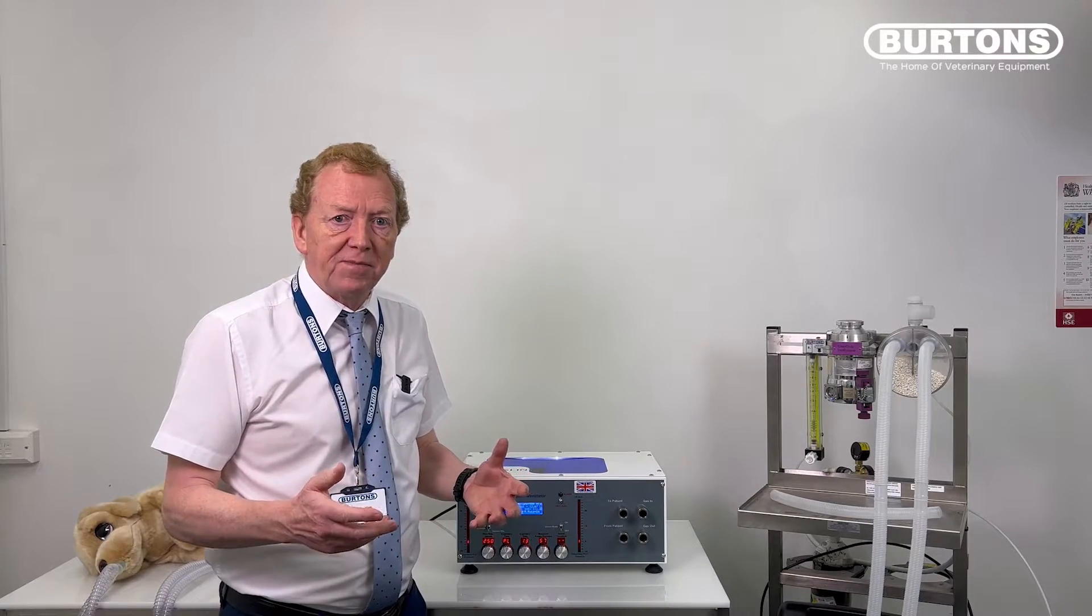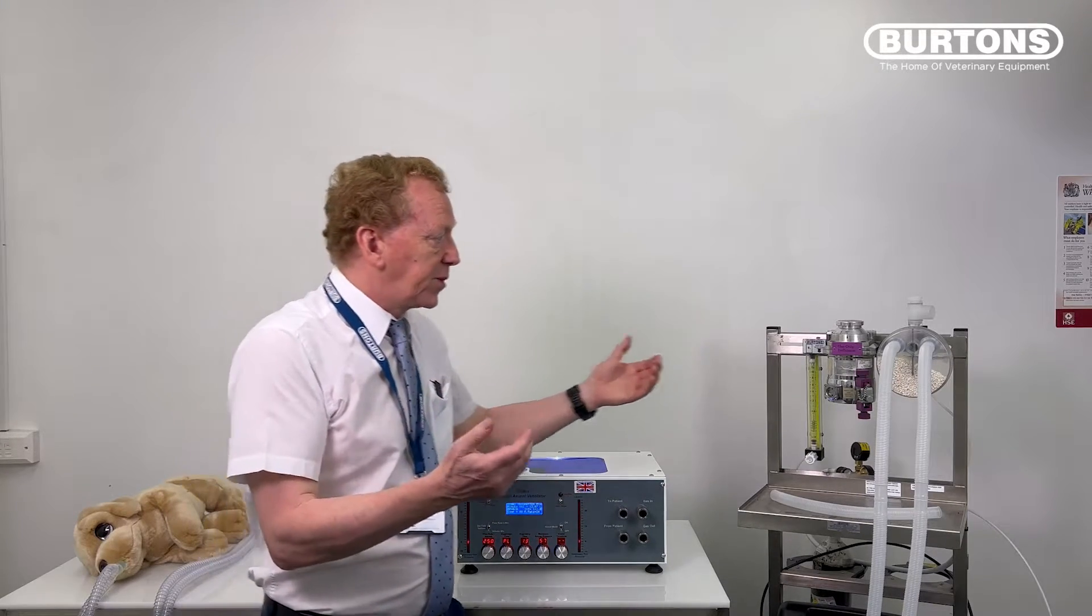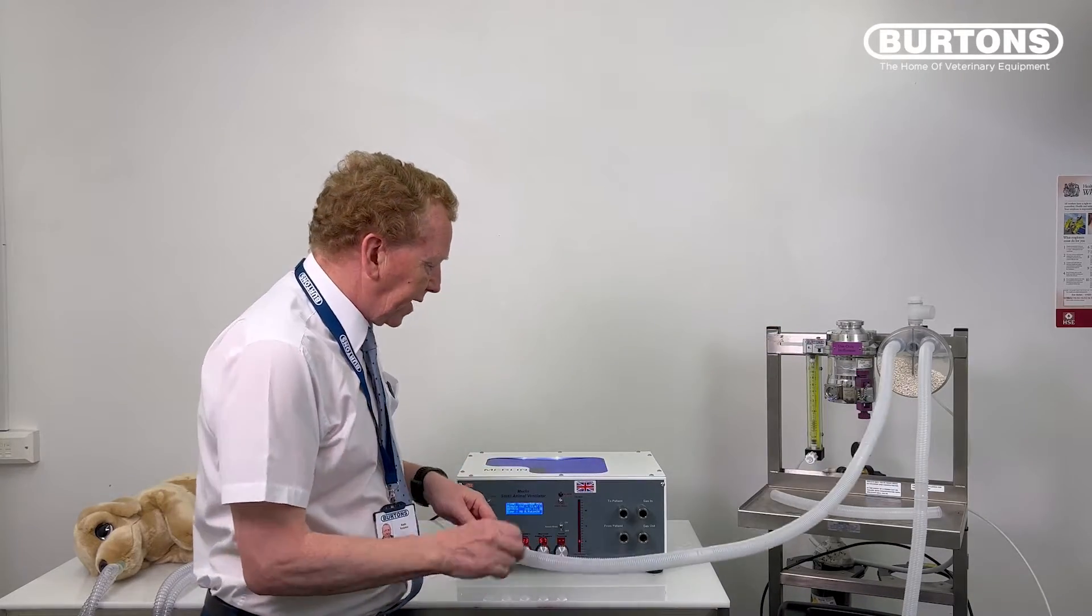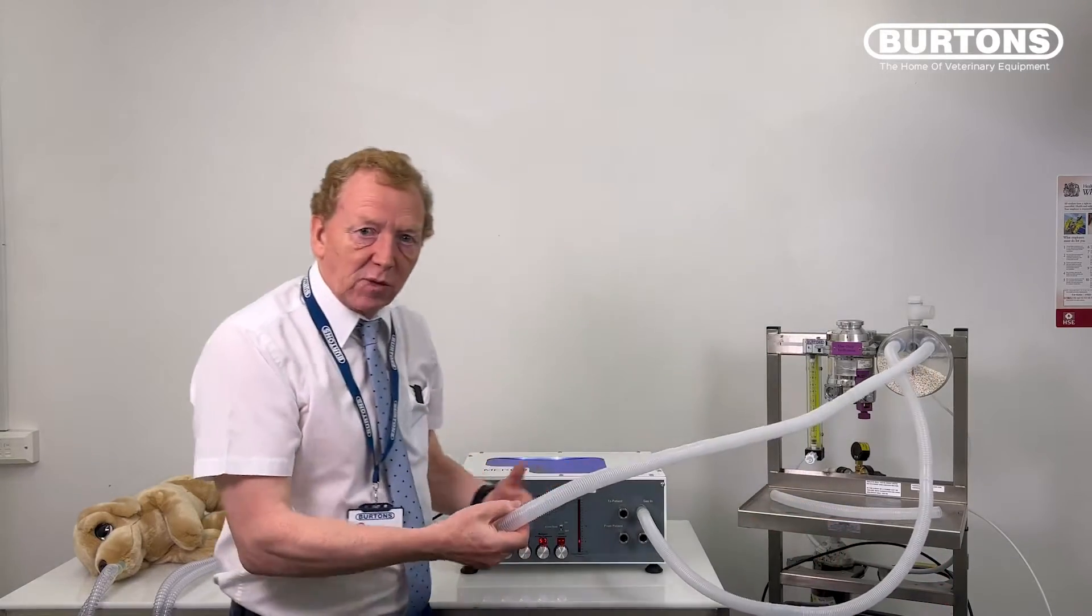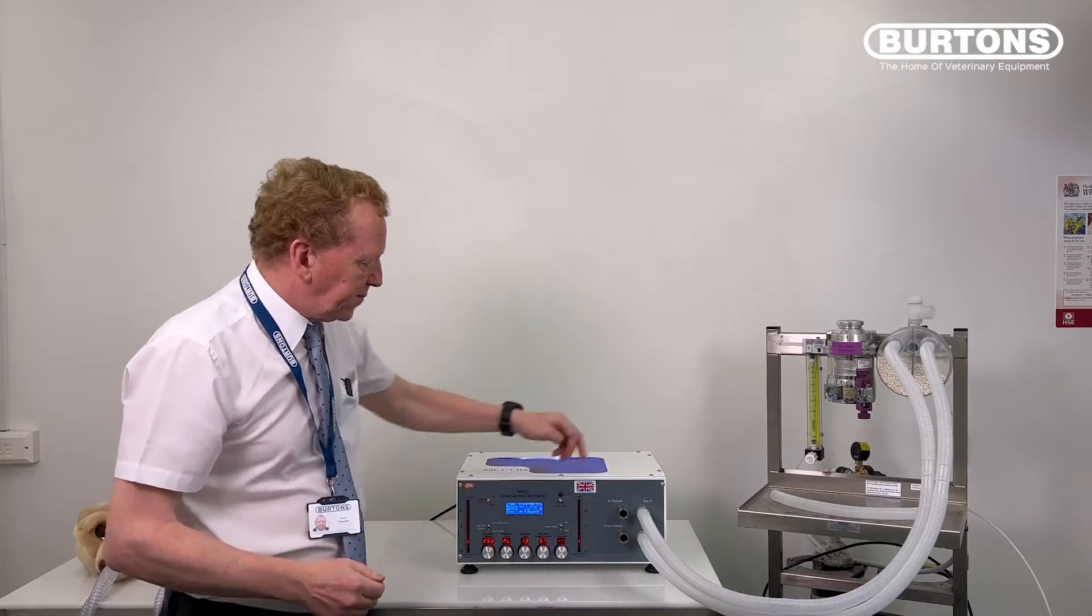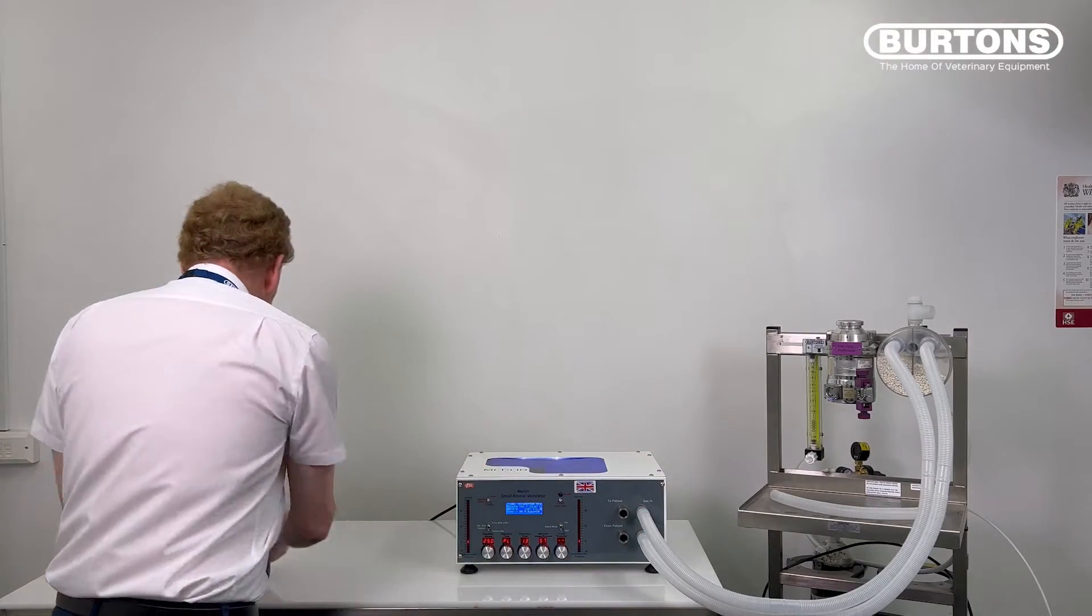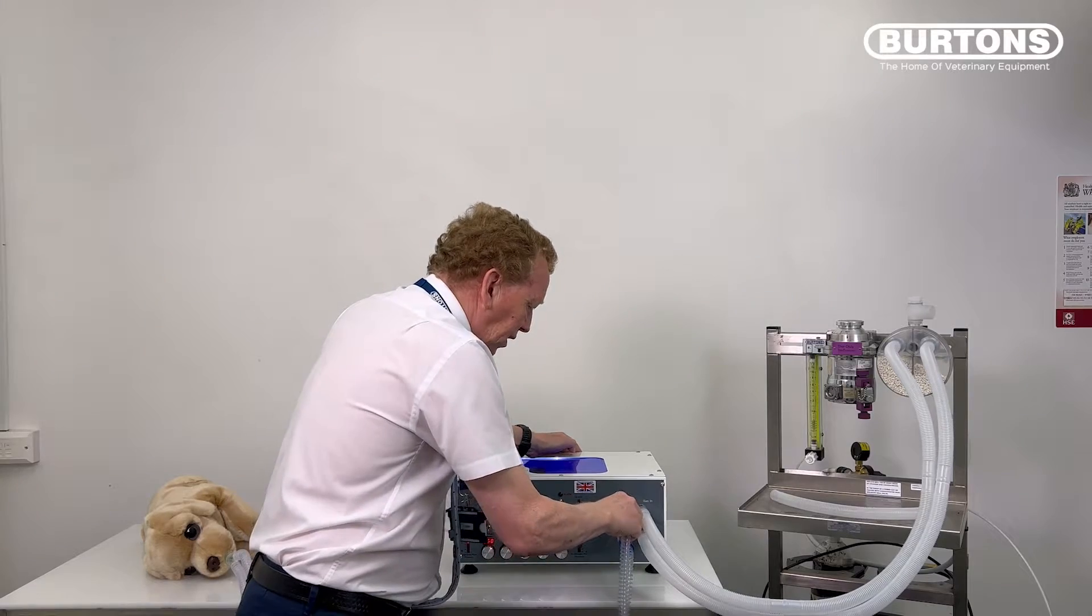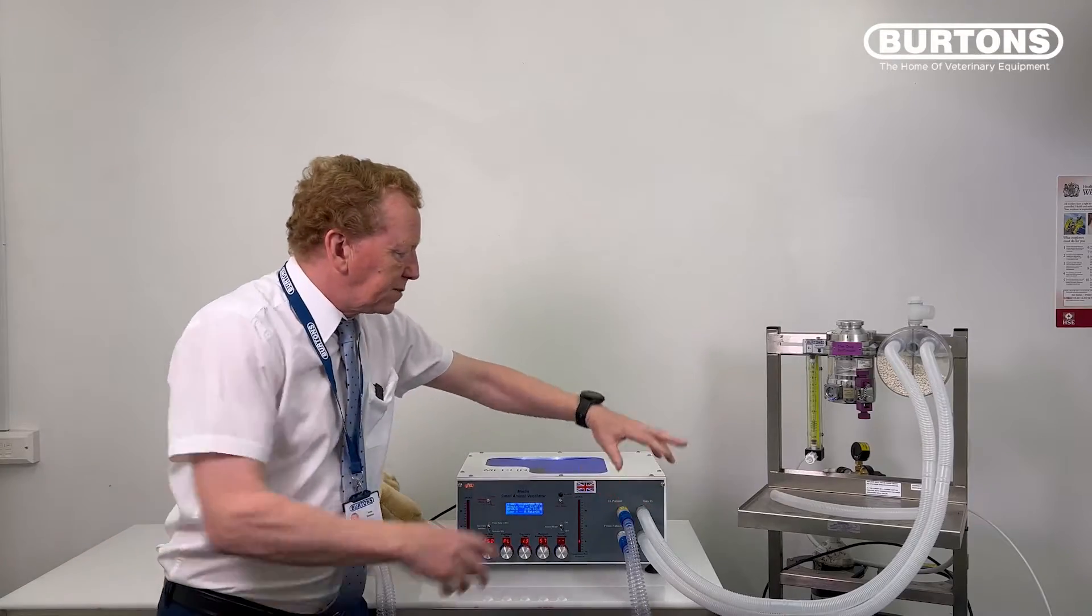We'll start with the rebreathing system. It's very simple to set up. We're going to take the inspiratory limb from a suitable circle system and put that into our gas in. Then we're going to take the expiratory limb that would take the gas away from the patient normally and take that out from the gas out. As you probably remember from other videos, internally that is connected to that and that is connected to that. So if we put a patient system on here, then we put that to that and this is running down to the patient. What we've really done is just made this a long tube.